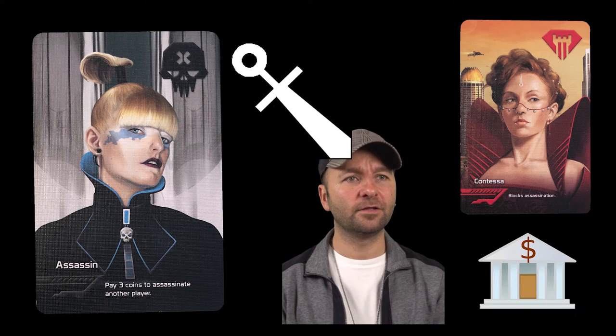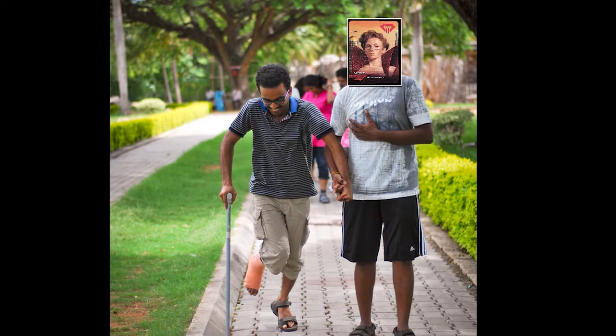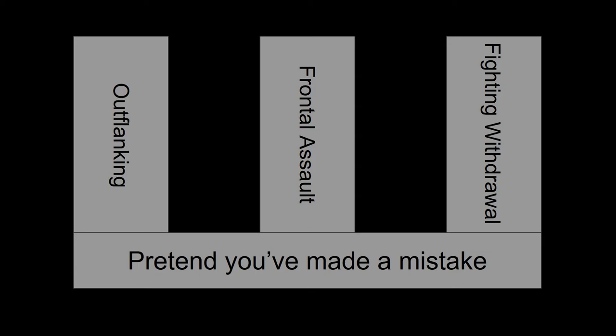If you really want to push it, you can get assassinated while you have a Contessa and save it, though you shouldn't do this unless you have a real coherent plan to win that relies upon this strategy.